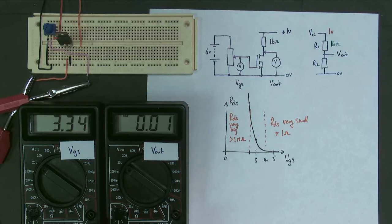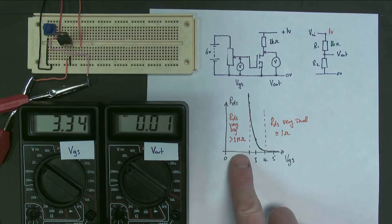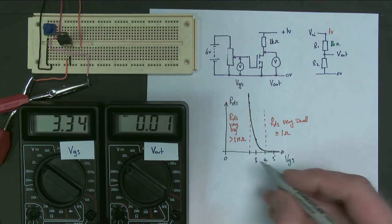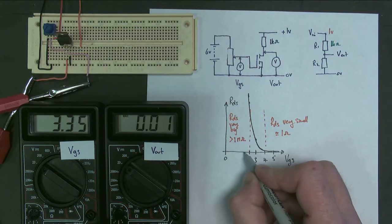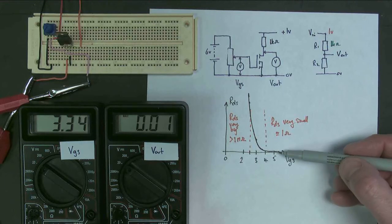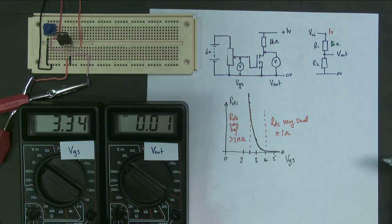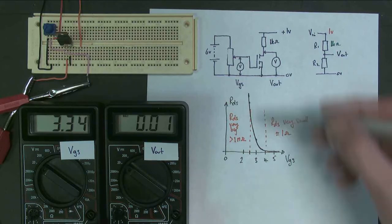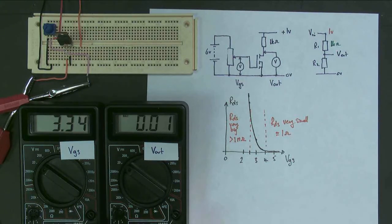So what we can say is here that for low gate source voltages, 2 volts and less, then the resistance is extremely high. For high gate source voltages, anything above the threshold voltage really, the resistance is really very small. And somewhere in between, it changes extremely rapidly. I'm going to build a different circuit and then carry on with this.